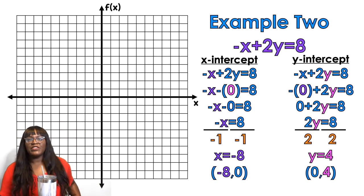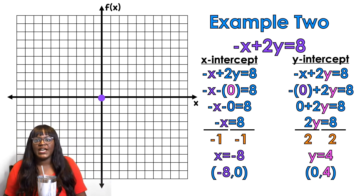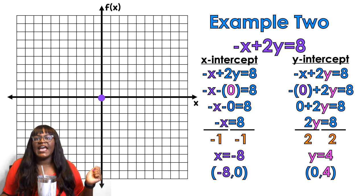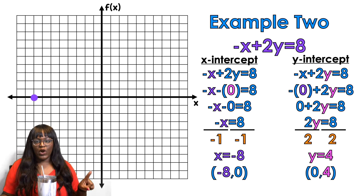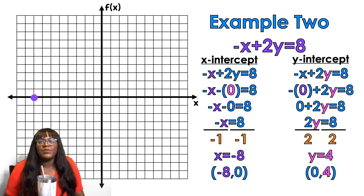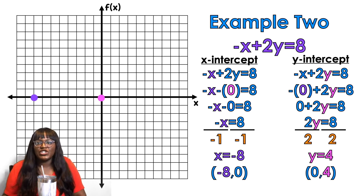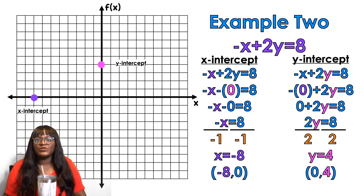We're going to plot the points. Starting with the x-intercept, from the origin we go to negative 8 on the x-axis. Then for the y-intercept, from the y-axis we go up 4. Now I have my x-intercept, I have my y-intercept, and I can draw a line.